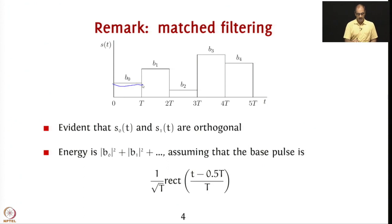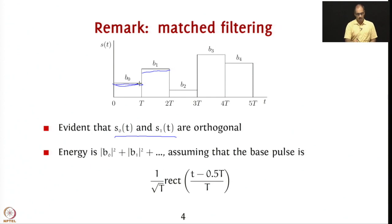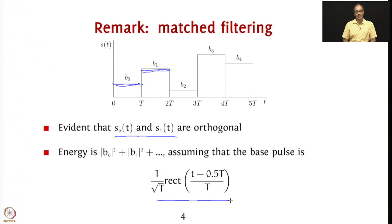To compute the energy of a symbol we take the energy of b₀ over its interval and b₁ over its interval. The energy over each interval is |b₀|² times the energy of g, plus |b₁|² times the energy of g, and so on. If we assume the energy of g is unity, then the signal energy is b₀² + b₁² + b₂² + ... The s₀ and s₁ pulses are implicitly orthogonal — s₀ is a rectangle stretching from 0 to T with amplitude b₀, while s₁ stretches from T to 2T with amplitude b₁, so they are orthogonal.